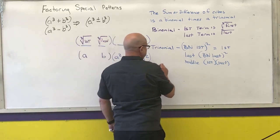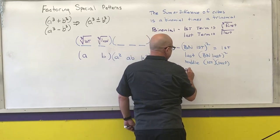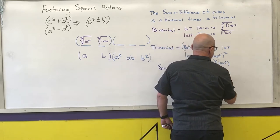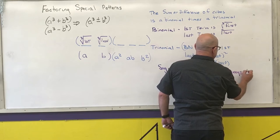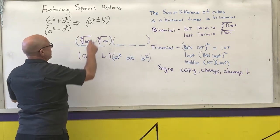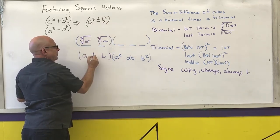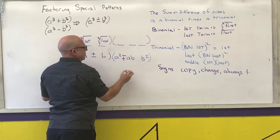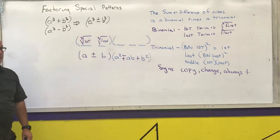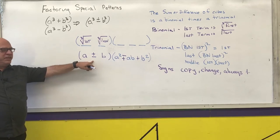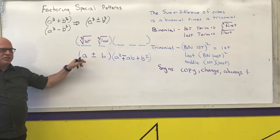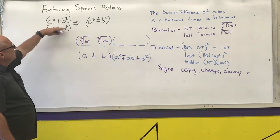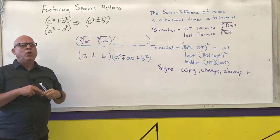The sign pattern is: copy, change, always positive. Copy — if the original sign is plus, it stays plus; if minus, it stays minus. Change — the opposite of the original sign. The last term of the trinomial is always positive. The binomial can be solved easily, and the trinomial that you end up with is never factorable. Once you do this sum or difference of cubes pattern, you know you are done.